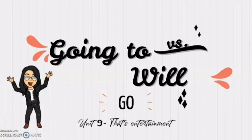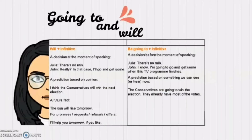Today we are going to talk about 'going to' versus 'will', and this is part of Unit 9: Entertainment. I made a chart for you where you can find the differences between 'going to' and 'will'. If you remember, both 'going to' and 'will' are used to explain or express the future. For example, with 'will' you can say 'I will be there with you', and with 'going to': 'I am going to the cinema after.'